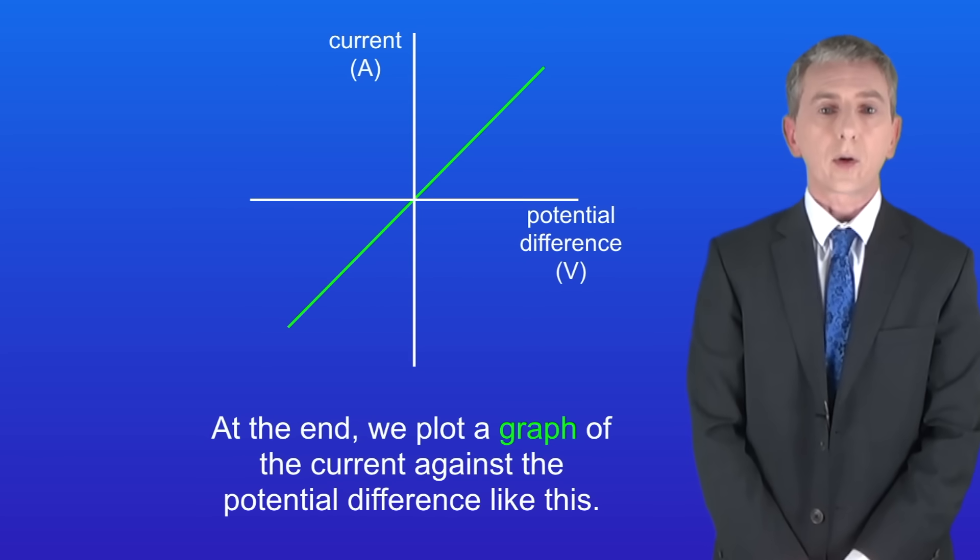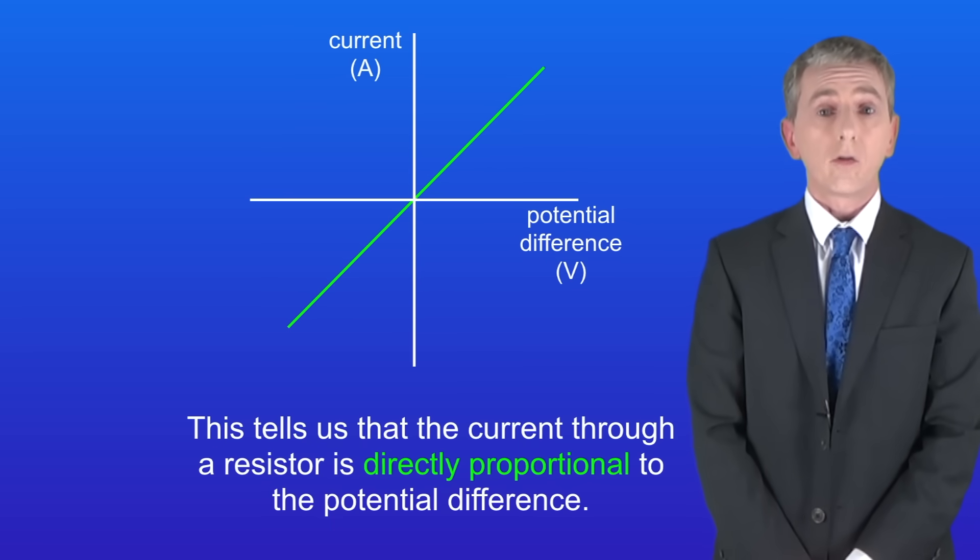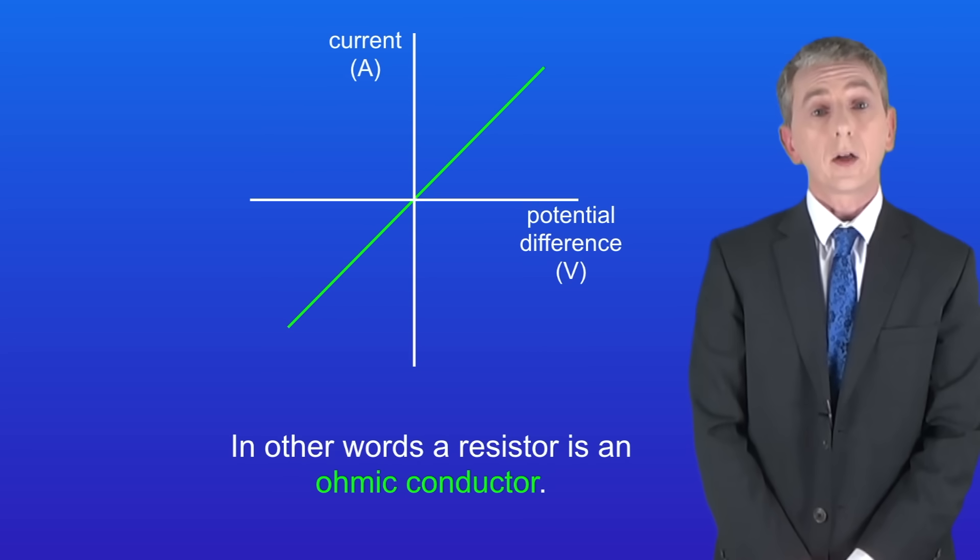At the end we plot a graph of the current against the potential difference. As you can see we get a straight line passing through zero. This tells us that the current through a resistor is directly proportional to the potential difference. In other words, a resistor is an ohmic conductor.